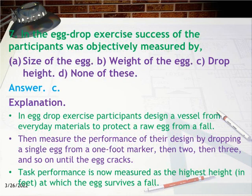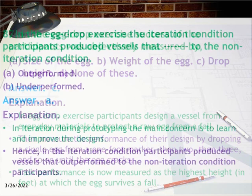Question 7: In the egg drop exercise, the success of the participants was objectively measured by: a) size of the egg, b) weight of the egg, c) drop height, d) none of these. Answer: C. Explanation: In the egg drop exercise, participants design a vessel from everyday materials to protect a raw egg from a fall, then measure performance by dropping an egg from a one-foot marker, then two, then three, and so on until the egg cracks. Task performance is measured as the highest height in feet at which the egg survives a fall.